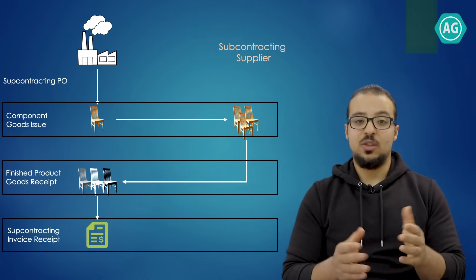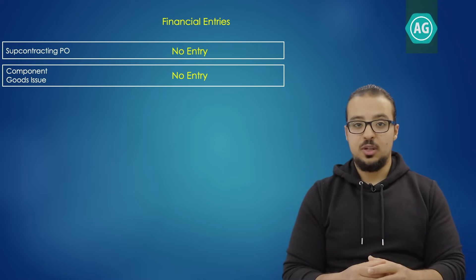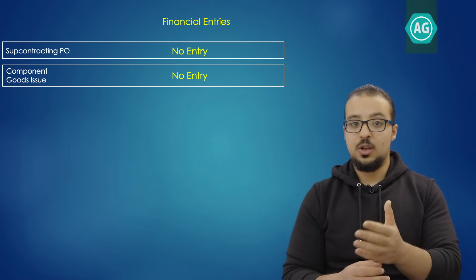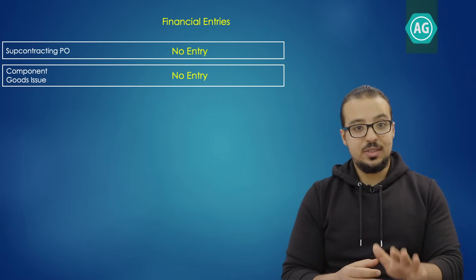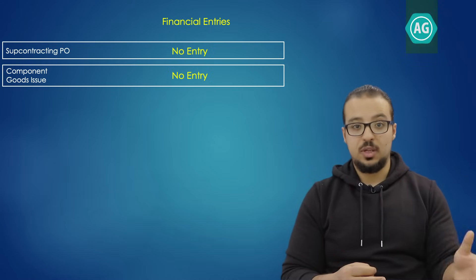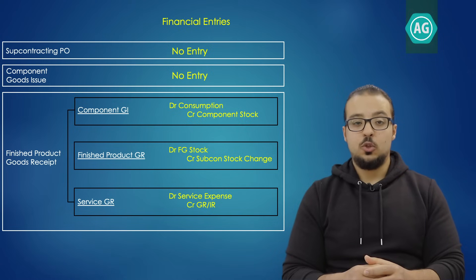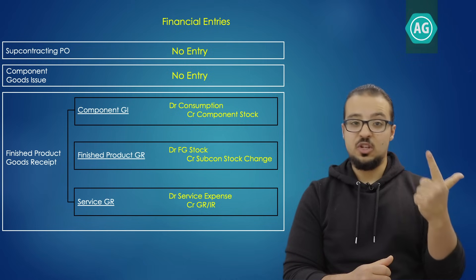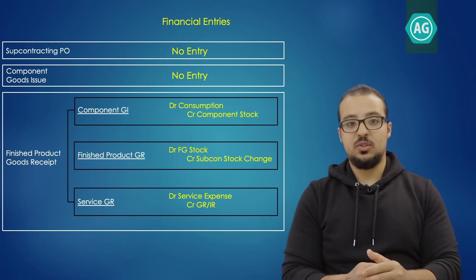Now let's look at the financial entries. When we do the goods issue of the unpainted chairs, there is actually no financial entry, because we are not selling the chairs — we are still the owners. Since nothing has changed, there are no financial entries and we still have these chairs in our stock inventory. Only when we do the goods receipt do we capture both the goods issue and goods receipt financial entries. At that point, three financial transactions happen simultaneously.